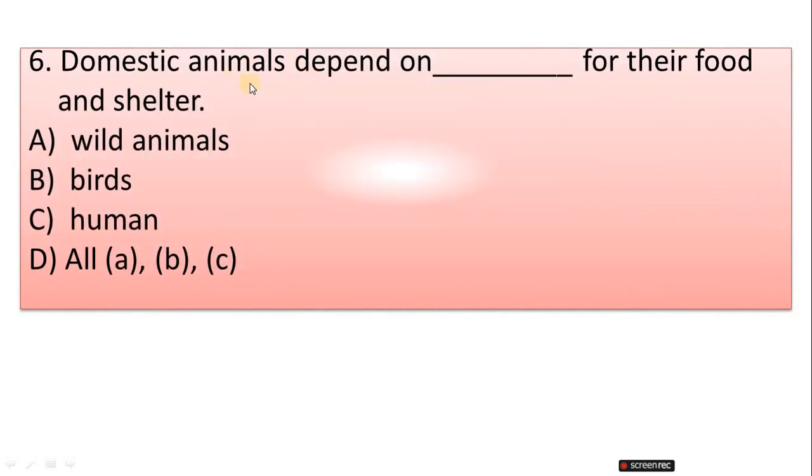Question 6: Domestic animals depend on whom for their food and shelter? A. Wild animals, B. Birds, C. Human, D. All of A, B, C. Correct answer is option C, Human.